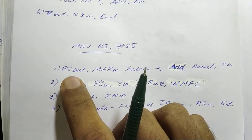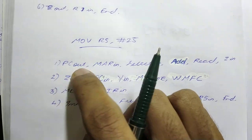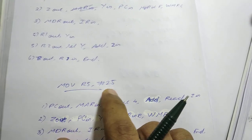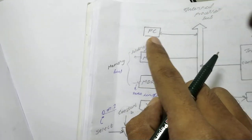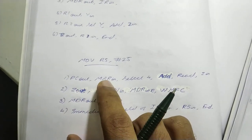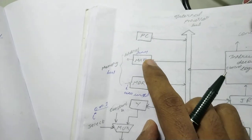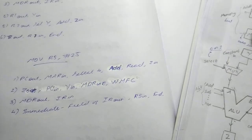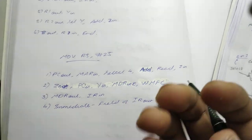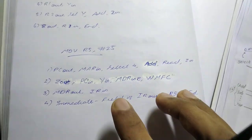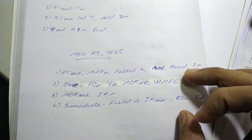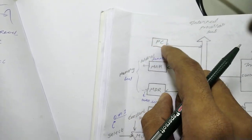First we need to get the instruction from RAM. For that we do PC out — the PC is the program counter, and it now holds the address of MOV R5, #25. So we do PC out, it comes onto the internal processor bus, then MAR in — so the MAR now has the address of MOV R5, #25. Now we do Select 4, because reading from memory takes some time and the processor does not want to sit idle, so in that small time period we will increment the program counter by 4.